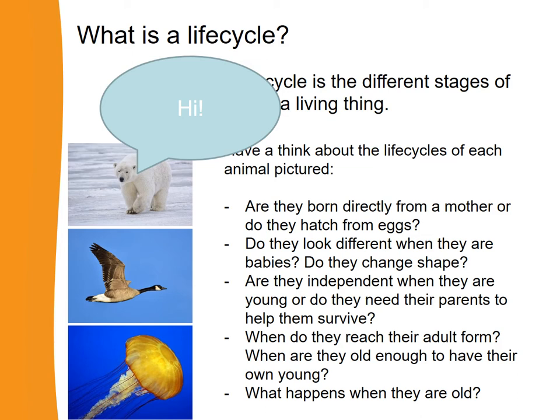Polar bears are not hatched — they're born from a mother. They look a little bit different when they're babies but are actually quite a similar shape to the adult polar bears; they just get a lot bigger. They're not independent when they're young — they need their mother's milk and parental care to survive in cold conditions. They reach adult form after a number of years, and that's when they're old enough to have their own young. An old polar bear will likely become too slow to hunt or look after itself and will die as a consequence.